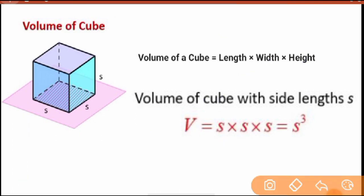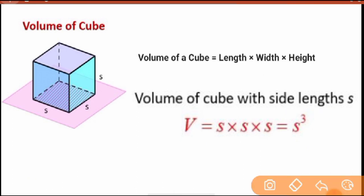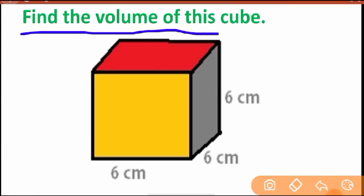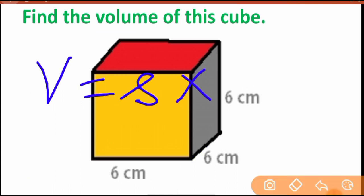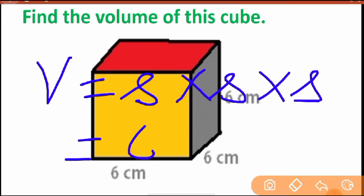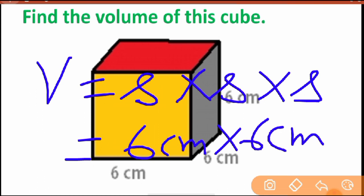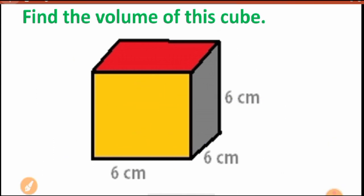Side lengths are the same — it may be written as a×a×a = a³, or s×s×s = s³. For example, find the volume of a cube where all side lengths are 6 centimeter: volume = 6×6×6. Multiply all three numbers and don't forget the unit — cubic centimeter, or centimeter cubed.